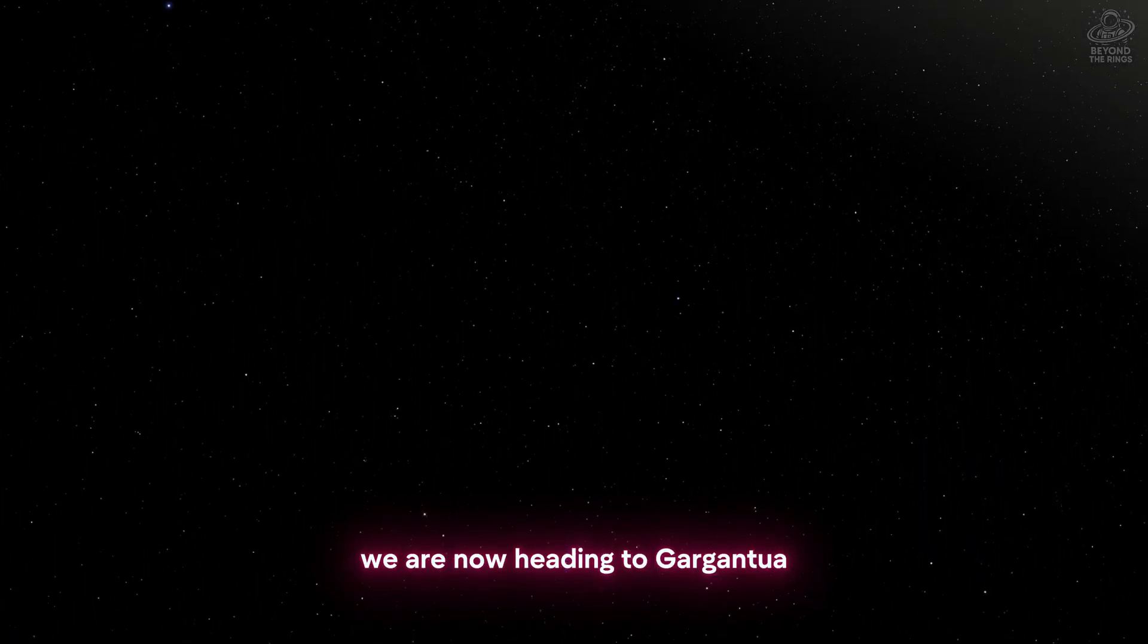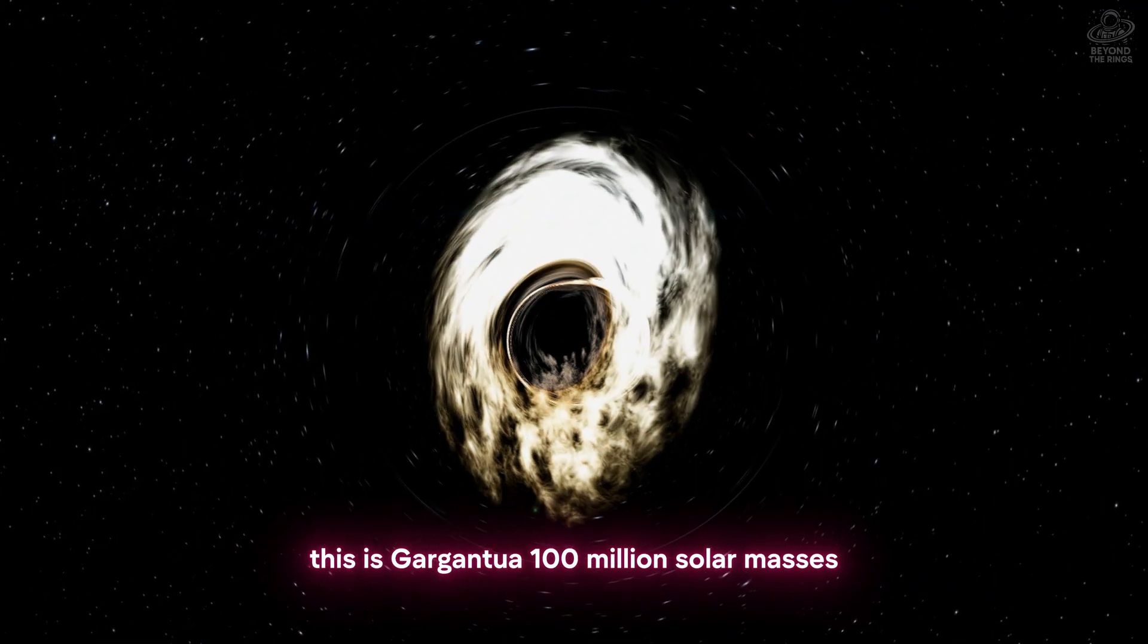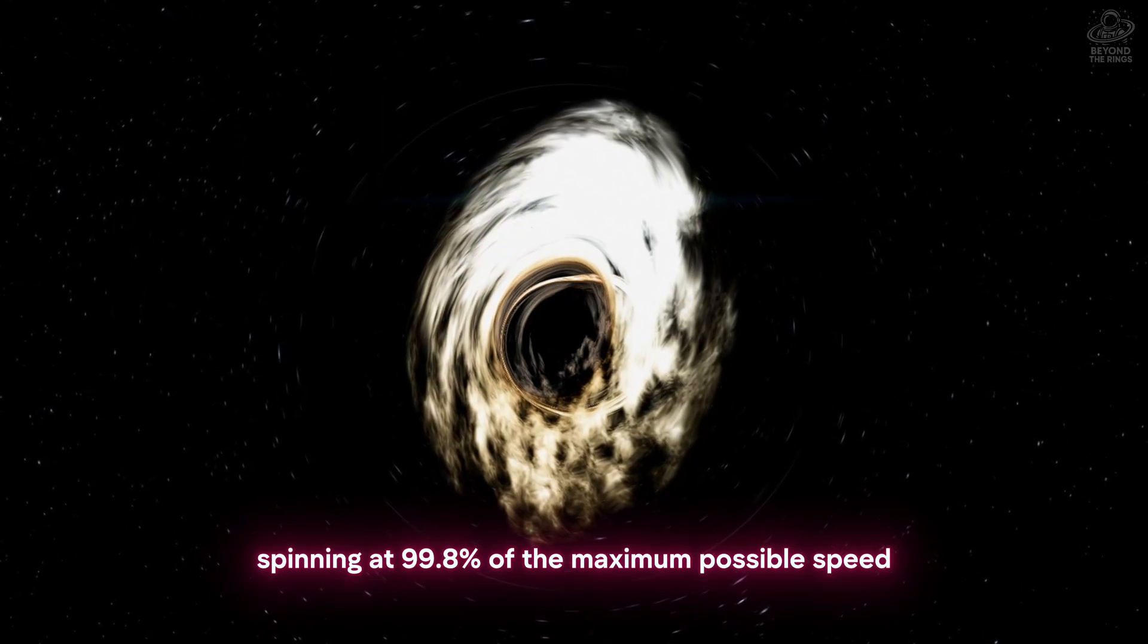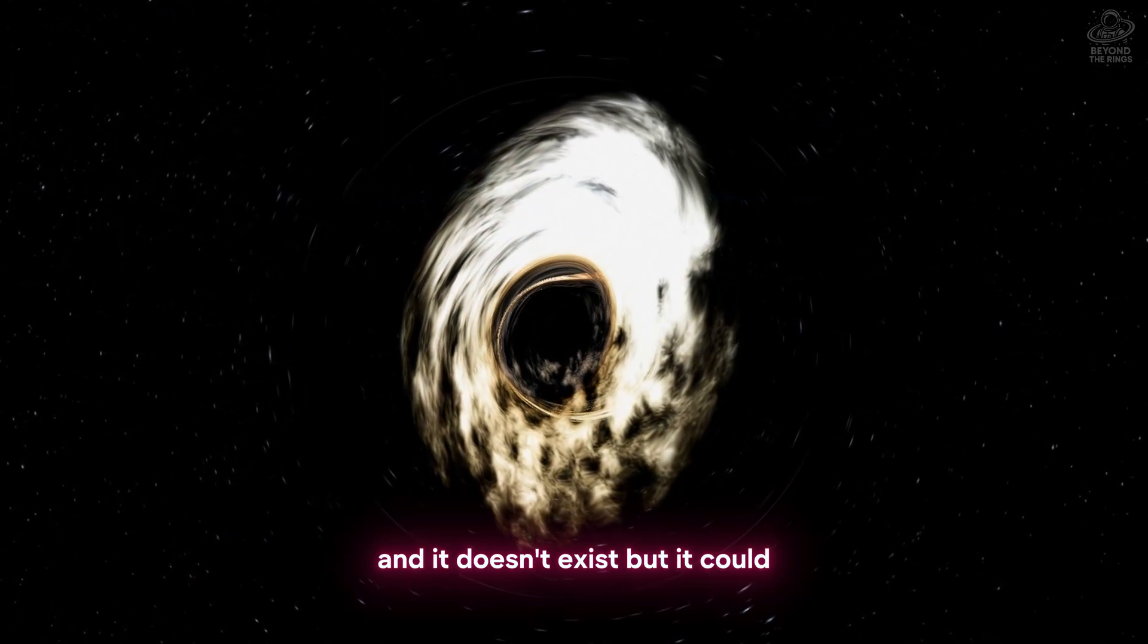We are now heading to Gargantua. The impossible dream. From Interstellar. This is Gargantua. One hundred million solar masses. Spinning at 99.8% of the maximum possible speed. And it doesn't exist. But it could.